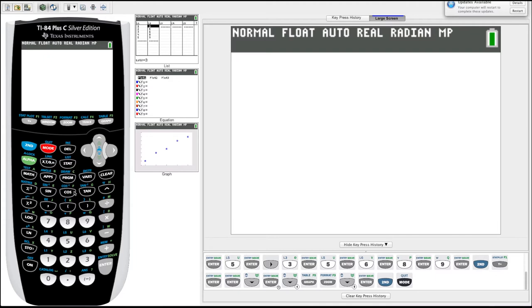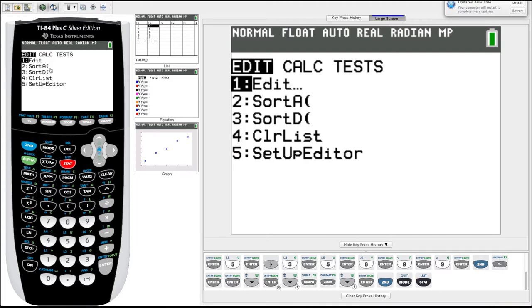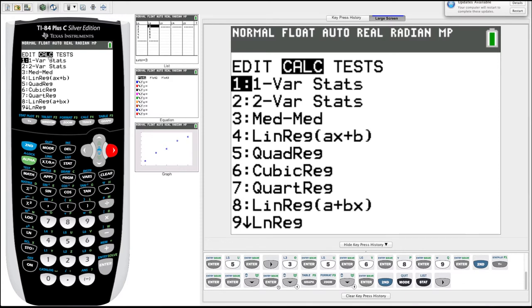And so then to find our linear regression line, we will go to the stat button. But this time, instead of going into edit, we're going to arrow over to this calc menu. Got a lot of options here, a lot of useful ones. We're going to arrow down to number four. Linear, linreg is short for linear regression. That's the one we want, because it looks like our data will fit very well on a line.